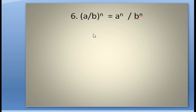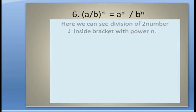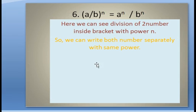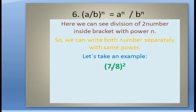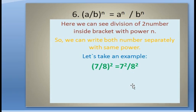Now come to the sixth property: (a divided by b) to the power n is equal to a to the power n divided by b to the power n. Here we have division of two numbers inside a bracket with power n, so we write both numbers separately with the same power. For example: (7 divided by 8) to the power 2 equals 7 to the power 2 divided by 8 to the power 2.